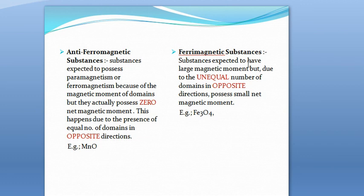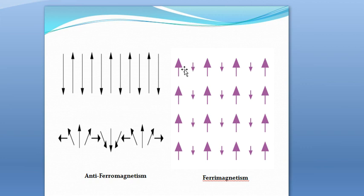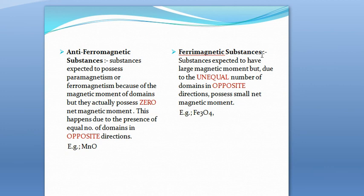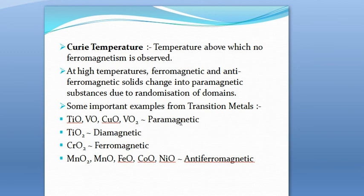The last type is ferrimagnetic substances. Looking at the diagram, when the external magnetic field is applied, the domains align but in unequal numbers in opposite directions — one domain has more metal ions than the other. The magnetic moment of one domain is cancelled by the other, but not completely. These substances are expected to have a large magnetic moment, but due to the unequal number of domains in opposite directions, they possess only a small net magnetic moment.